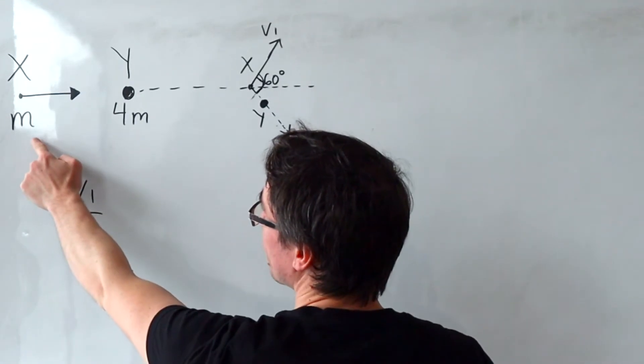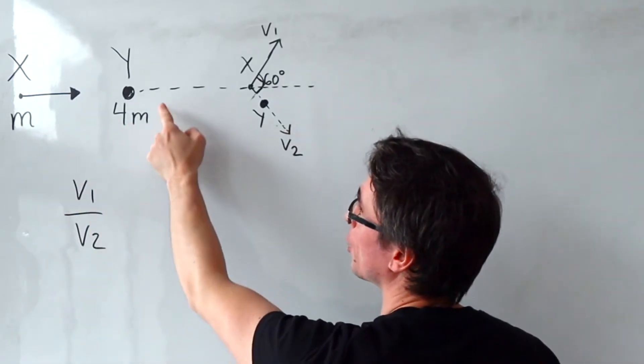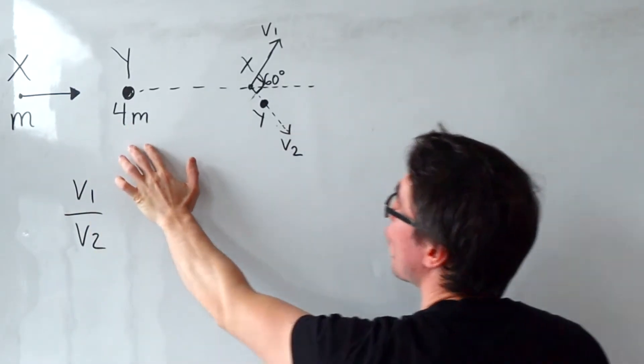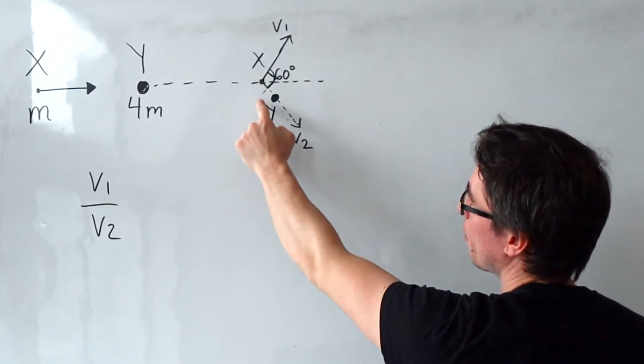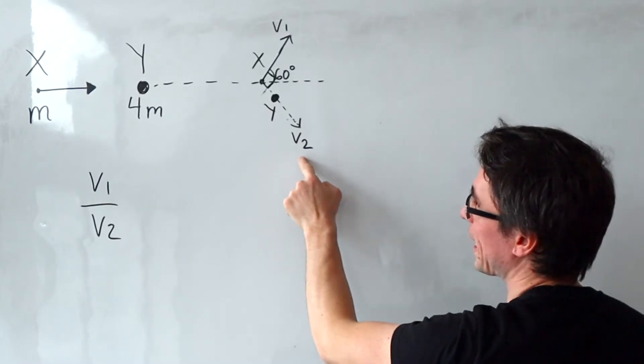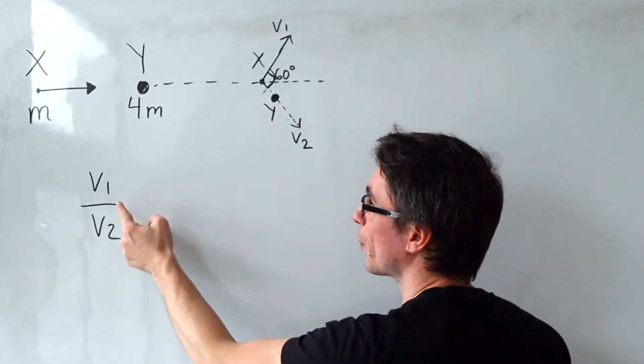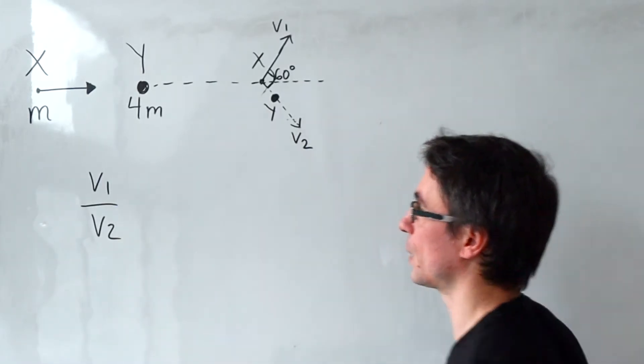We have a particle X of mass M that hits particle Y of mass 4M. After the collision, particle X travels with V1 in this direction, particle Y with V2 in that direction, and we're looking for the ratio of V1 to V2.